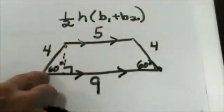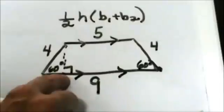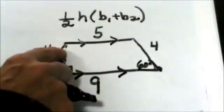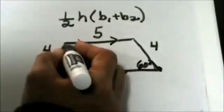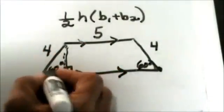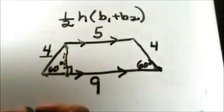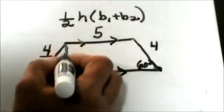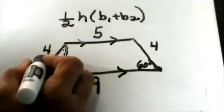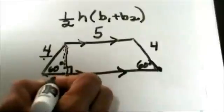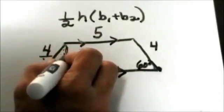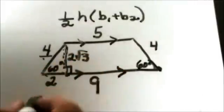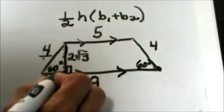You have a 60 degree angle here so when you drop this altitude down you have a 30-60-90 right triangle. So when I drop the altitude down I can find this distance by taking half of the hypotenuse to find the short leg and that is 2, and multiply it times the square root of 3 to find the long leg which is also the height of our trapezoid.